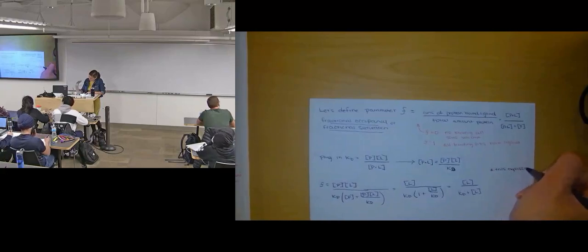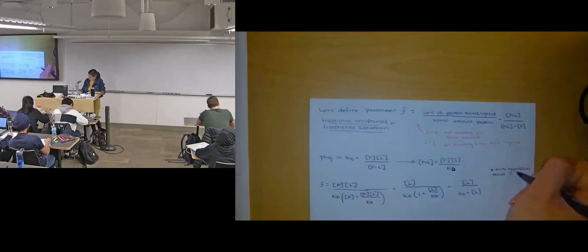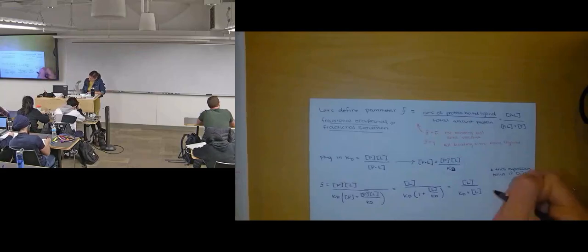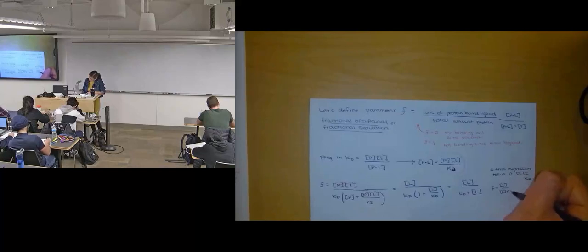Basically what it tells us, if our concentration of free ligand is equal to KD, then f will be equal to one half.